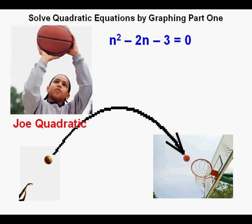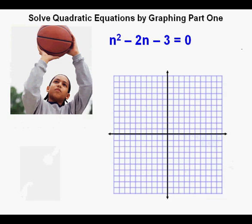With this method, he will be able to solve quadratic equations such as this one, n² - 2n - 3 = 0. In order to graph this equation, something will need to be different. With only one unknown, there is no way for him to graph on a coordinate plane.